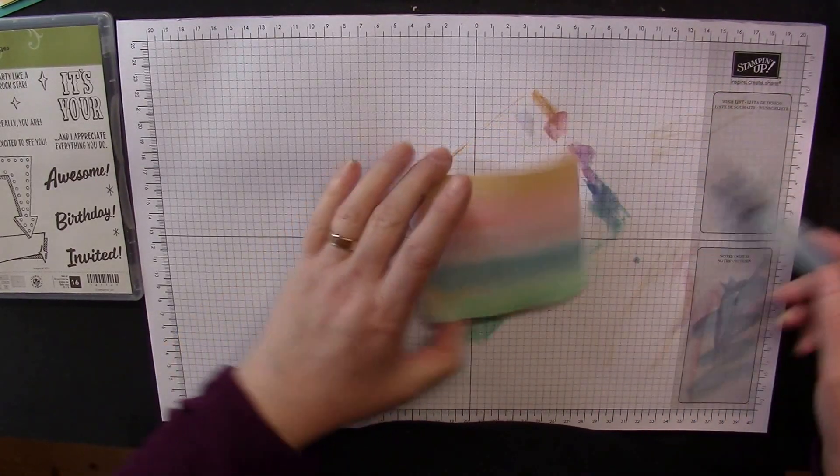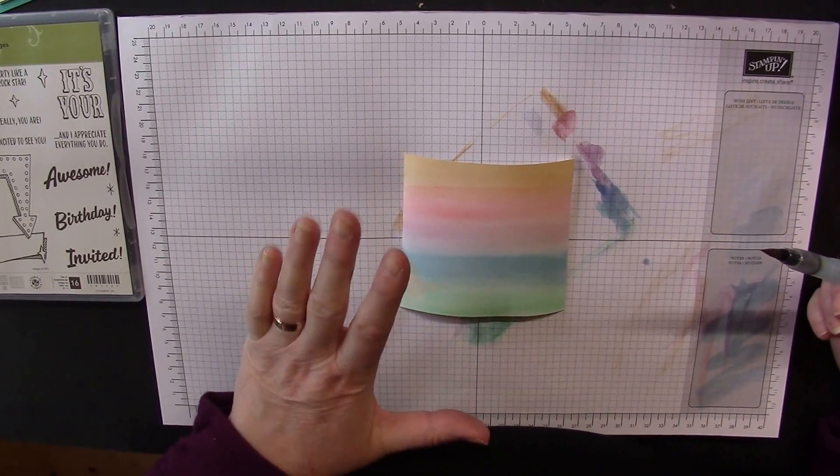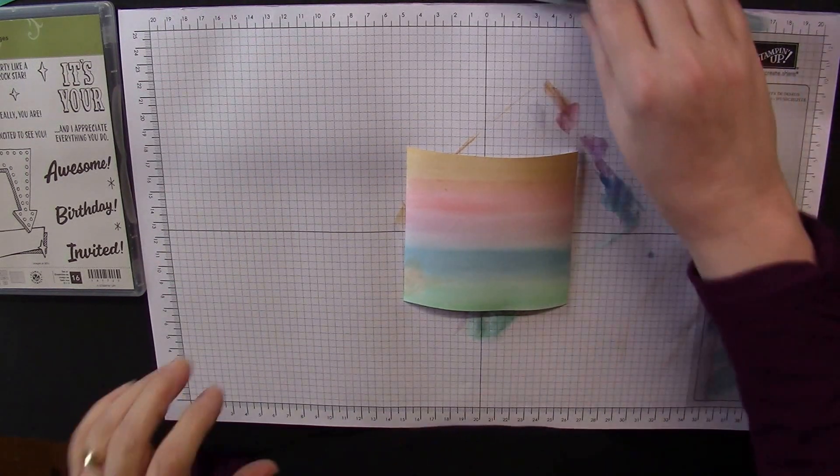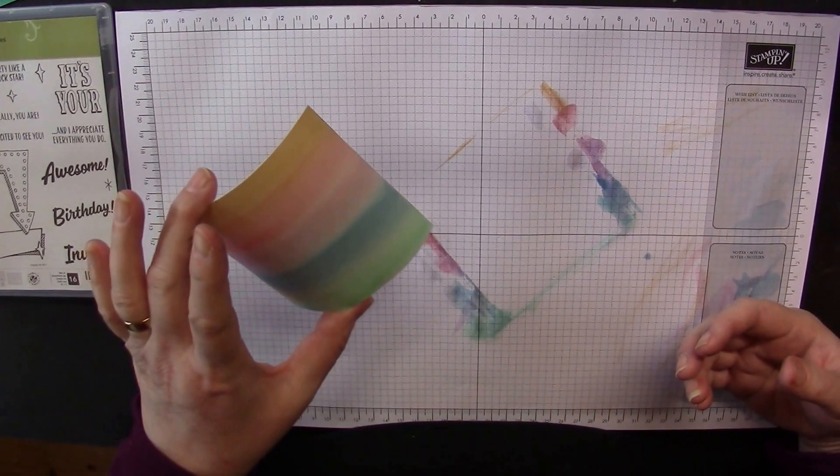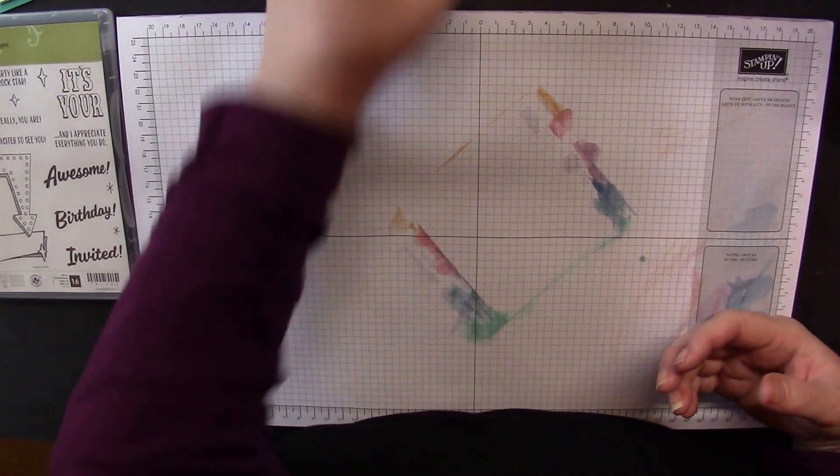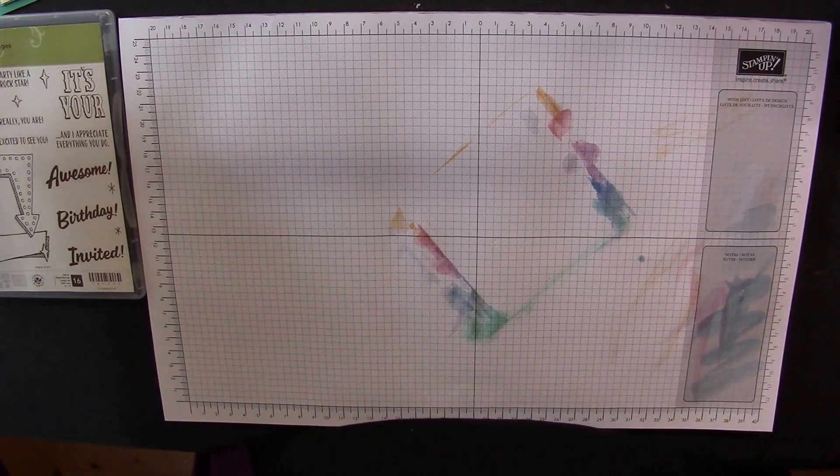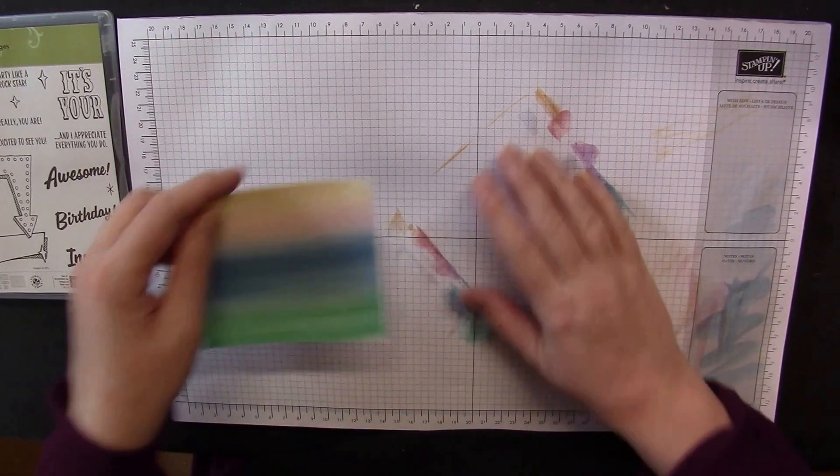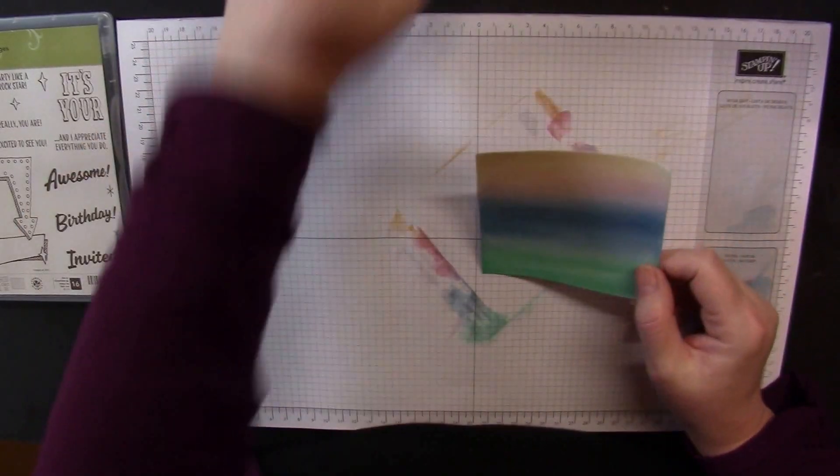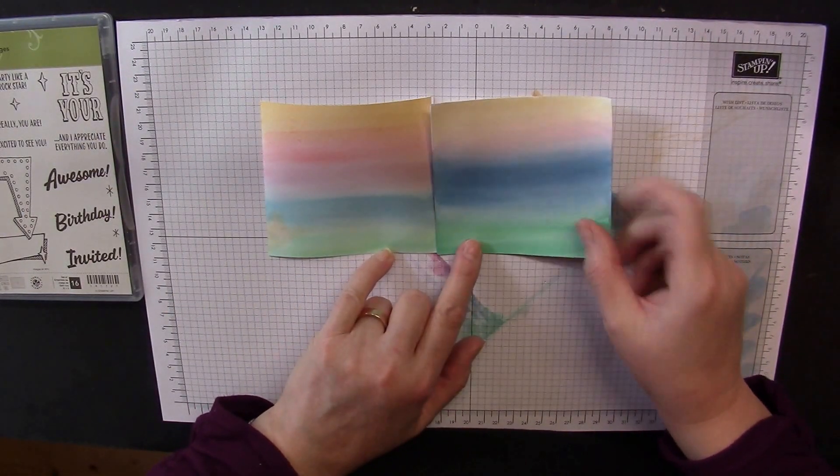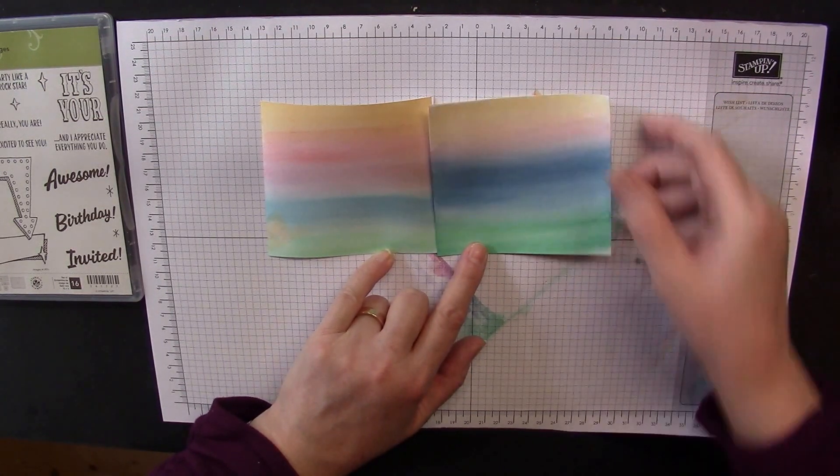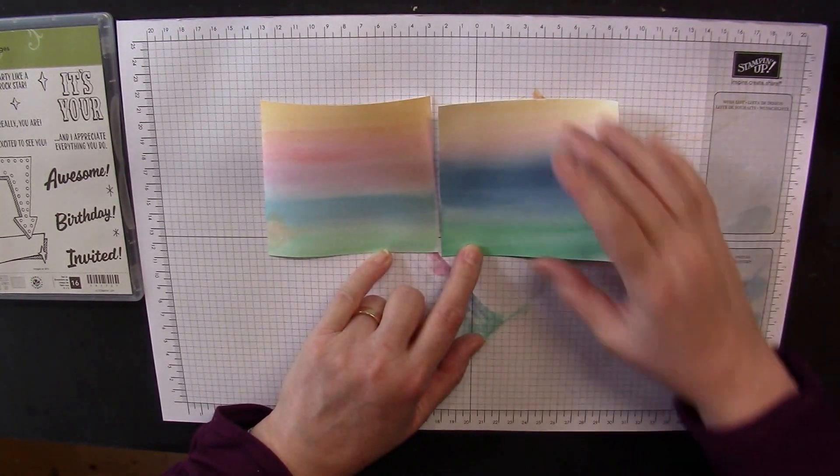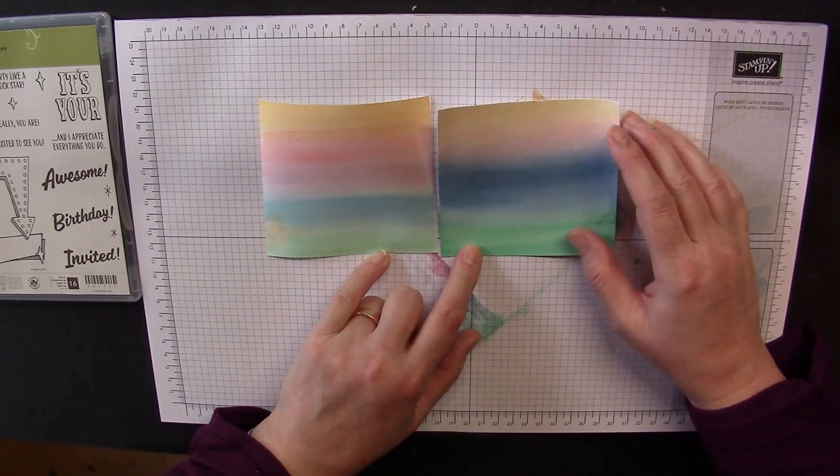These colors will change as they dry. And as if by magic, because you really don't want to sit here watching paint dry, I have one I did earlier. And there it is. That's the dry version. You can see that the amount of color that you've got in each section changes, which means each card is unique.